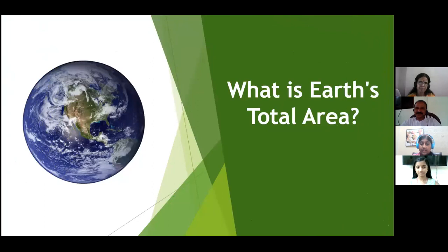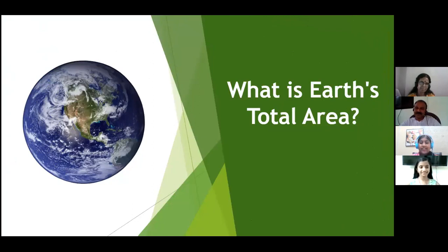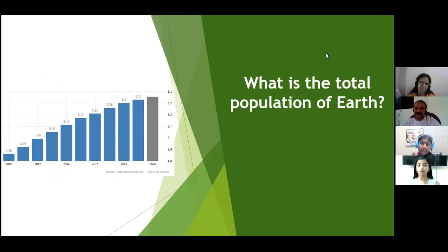We live on Earth, our home planet. It provides us with life and protects us from dangers. It is the only planet in the solar system that supports life. Do you know what its accurate area is? It is 510.1 million km². Just imagine how huge it is. It's a huge planet and many people live here. The exact population of the world is 7.8 billion. That's really big.